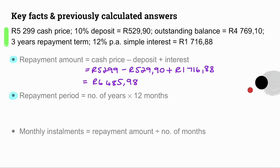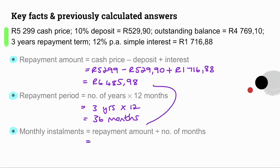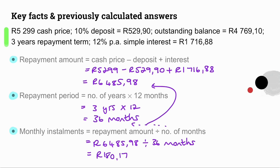Then our repayment period is the number of years times 12 months: 3 years times 12 months gives a repayment period of 36 months. Our last step is to determine monthly installments: repayment amount divided by number of months — R6,485.98 divided by 36 months — giving R180.17 per month.